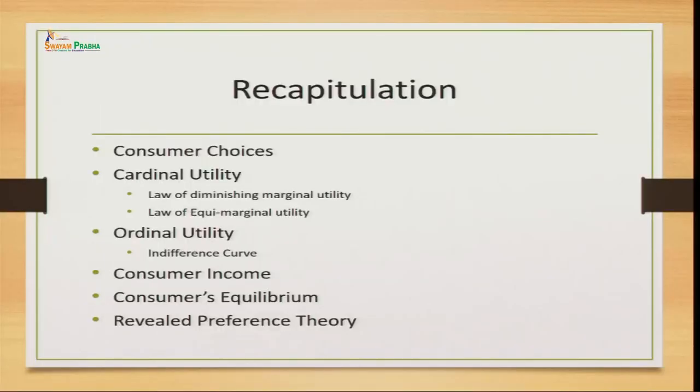The law of diminishing marginal utility works with only one commodity at a time, whereas in real life a person consumes more than one commodity so as to satisfy their needs and desires and gain maximum satisfaction. So we also talked about the law of equimarginal utility, which says that the marginal utility derived from the consumption of all commodities at the end should remain the same. Thereafter we talked about the ordinal utility concept, which was given by Hicks. In this we studied the indifference curve, also called the iso-utility curve. This curve helps us understand how people can have different combinations of commodities such that their utility remains the same.